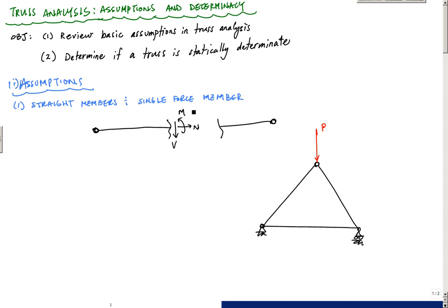What we're saying here for a truss element is that because of the next two assumptions, the moment and the shear end up becoming zero. You can check that based on equilibrium equations, but essentially all you have is this normal force, and therefore a single force member, the axial force.